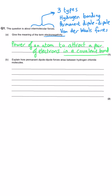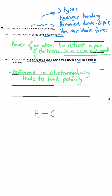The follow-up question asks us to explain how permanent dipole-dipole forces — the middle force in terms of strength — arise between hydrogen chloride molecules. The first thing you need to say about permanent dipole is that because of this difference in electronegativity you get bond polarity. In HCl, the hydrogen is bonded to the chlorine, and because chlorine is more electronegative than hydrogen, the electrons are pulled towards chlorine, making chlorine electron-rich and hydrogen electron-deficient.